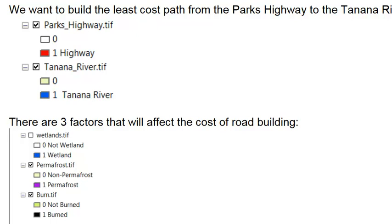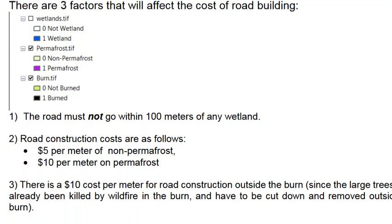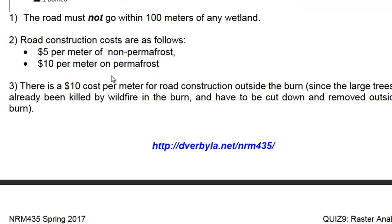There are three factors that will affect the cost of road building: wetlands, permafrost, and burns. The first is a barrier — the road must not go within 100 meters of any wetland. The second constraint is road construction cost as a function of permafrost: $5 per meter for non-permafrost pixels and $10 per meter on permafrost pixels.